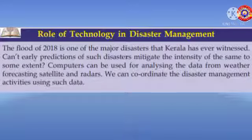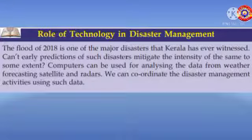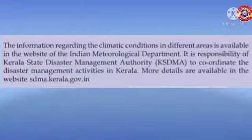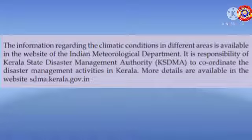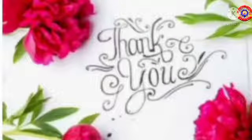The flood of 2018 is one of the major disasters that Kerala has ever witnessed. Computers can be used for analyzing data from weather forecasting satellites and radars. We can coordinate disaster management activities using such data. The information regarding climatic conditions in different areas is available on the website of the Indian Meteorological Department. It is the responsibility of the Kerala State Disaster Management Authority — KSDMA — to coordinate disaster management activities in Kerala. More details are available at the website sdma.kerala.gov.in.